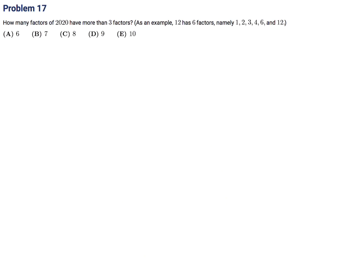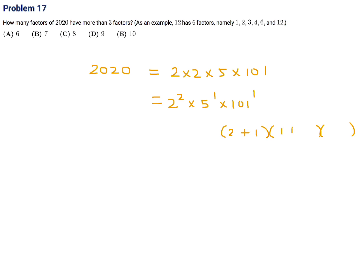How many factors of 2020 have more than three factors? First, find the prime factorization: 2020 = 2² × 5 × 101. The number of divisors is (2+1)(1+1)(1+1) = 3 × 2 × 2 = 12. Since there are only 12 divisors, we can list them all.